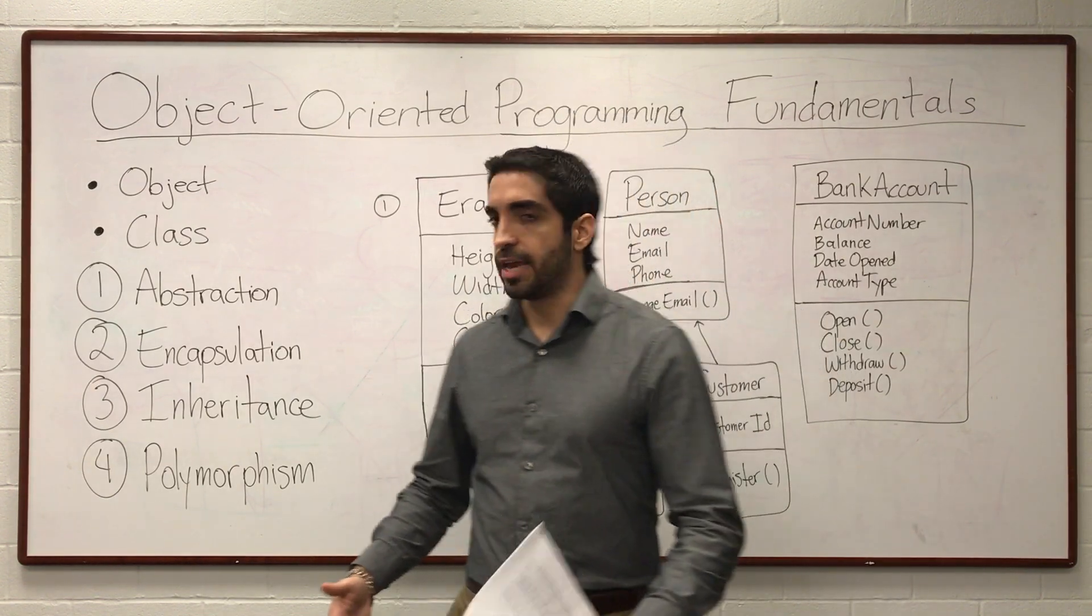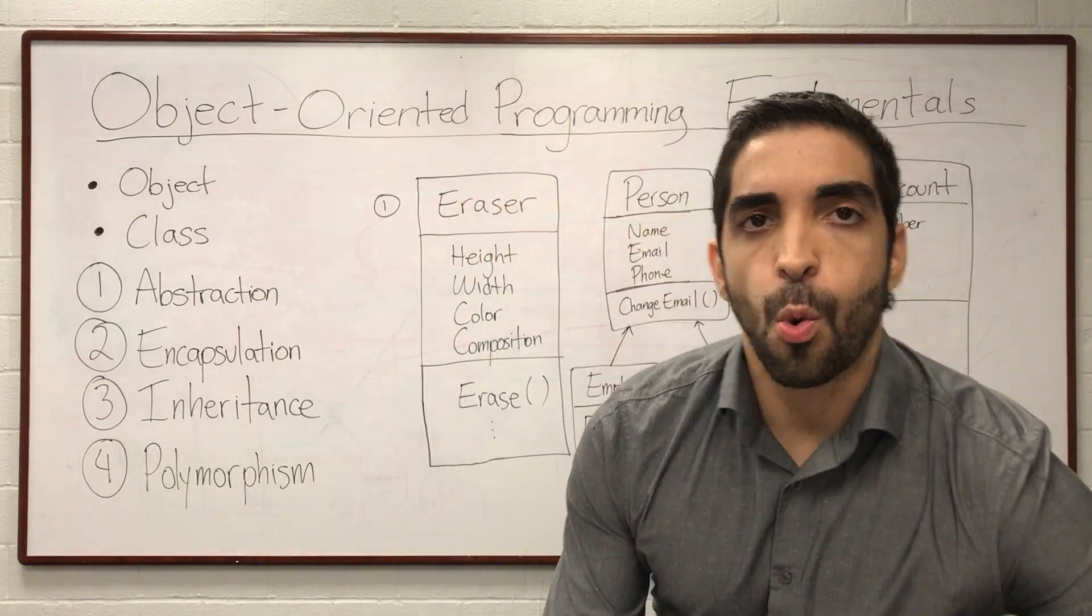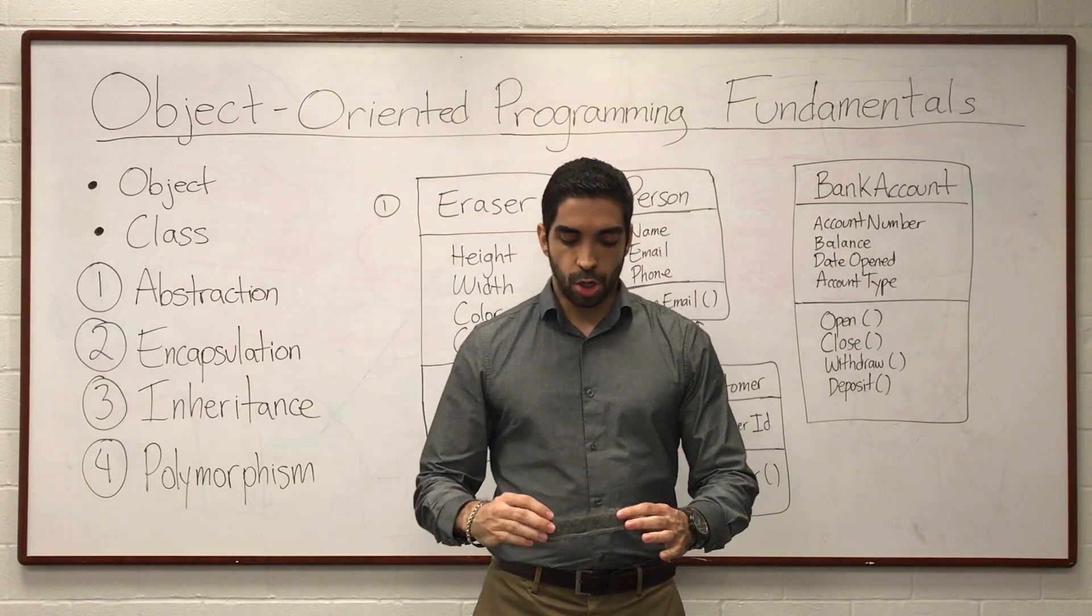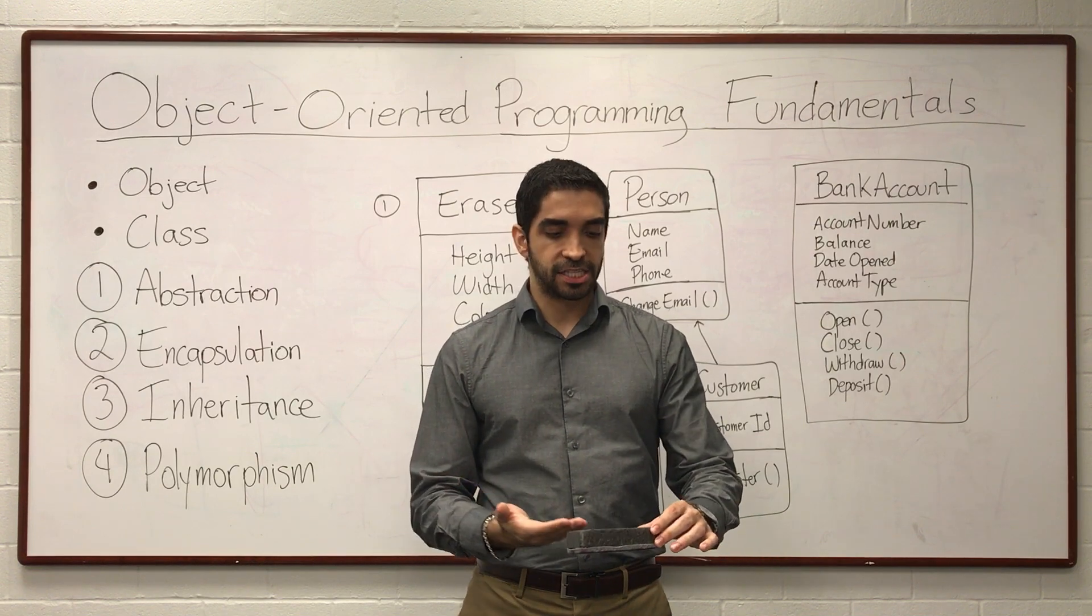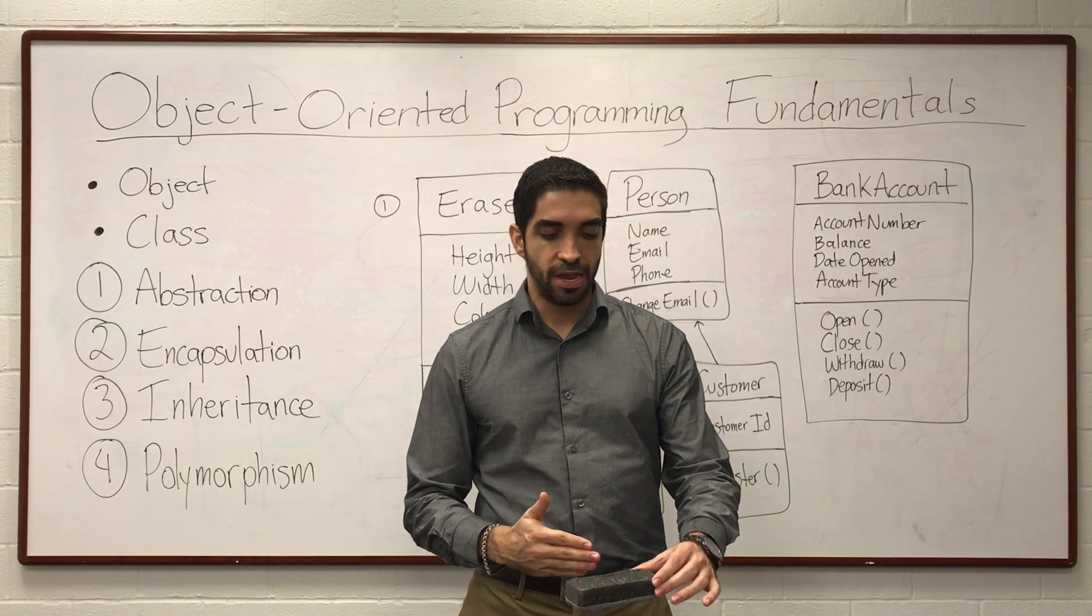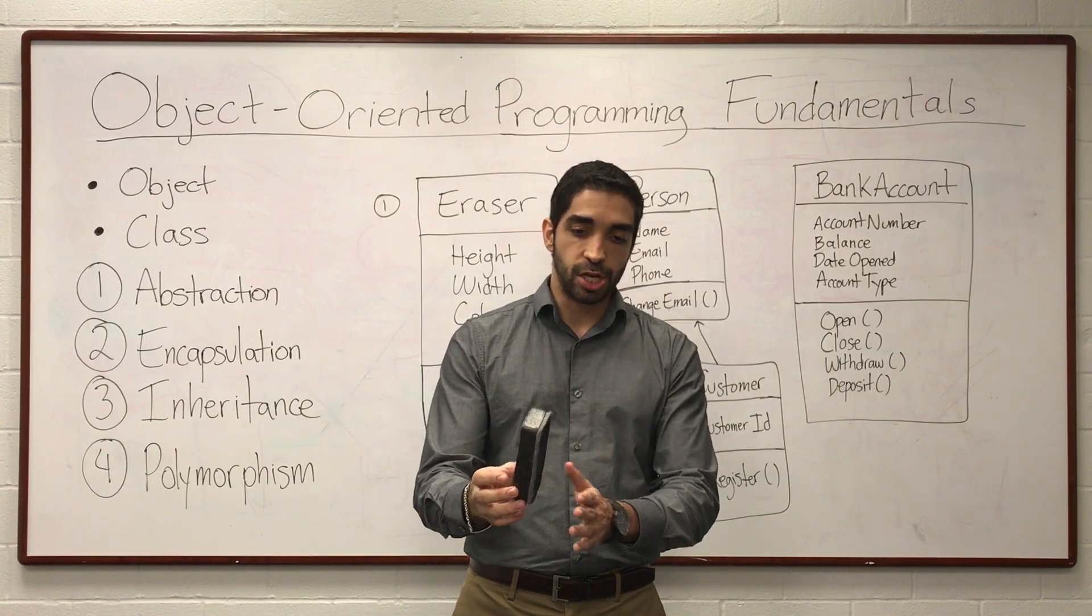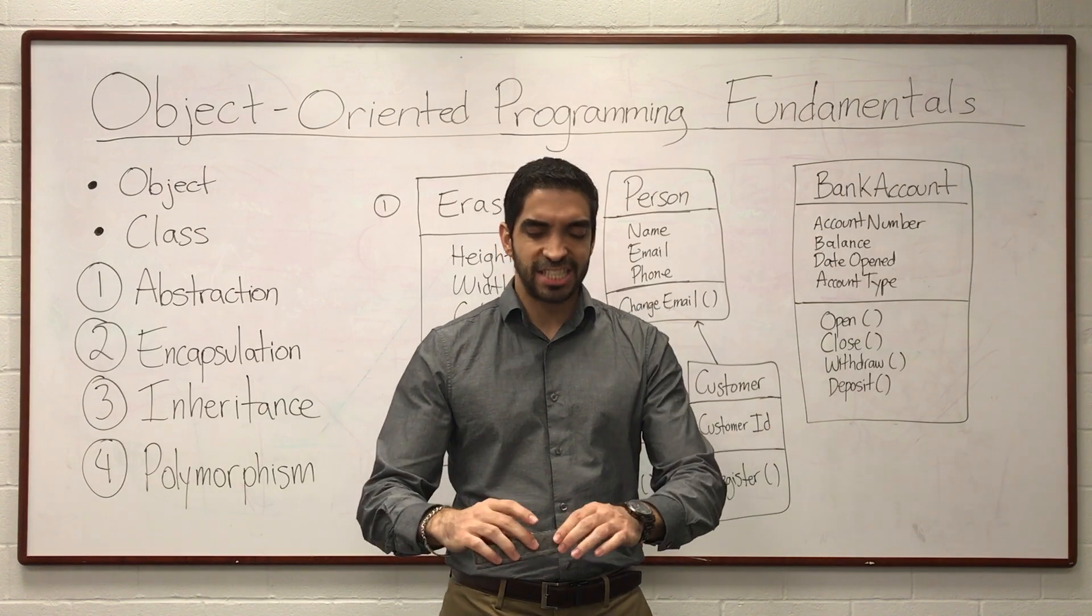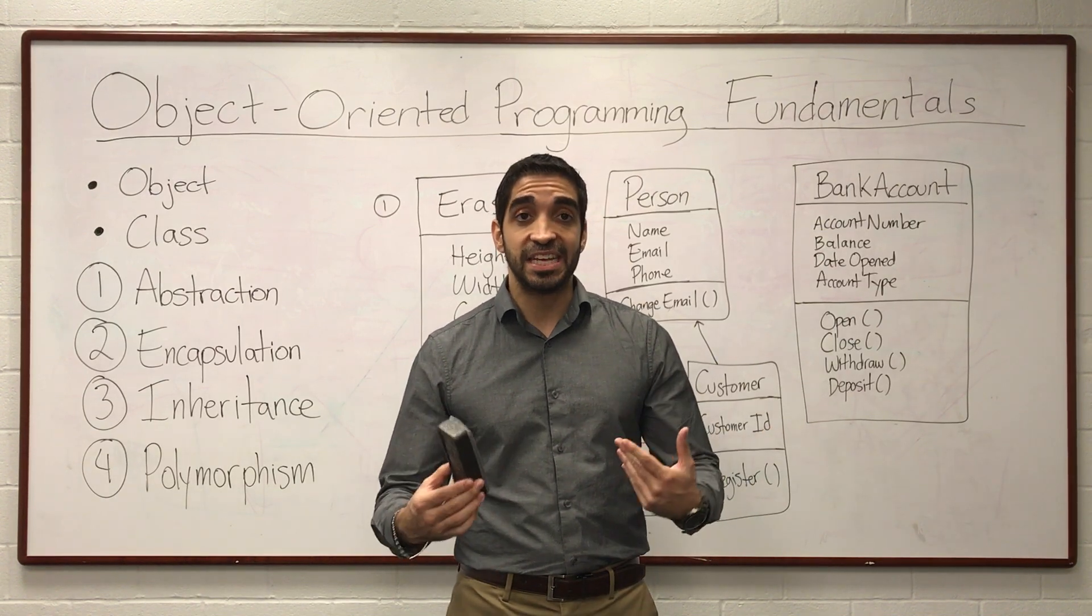So let's start with the most simple idea, which is the idea of an object. An object is what it sounds like intuitively, and it's best illustrated by example. This is an eraser object. It's a thing that has certain properties. For example, it has a color, it has a length, it has a width, a brand, a weight, etc. So it has specific properties.